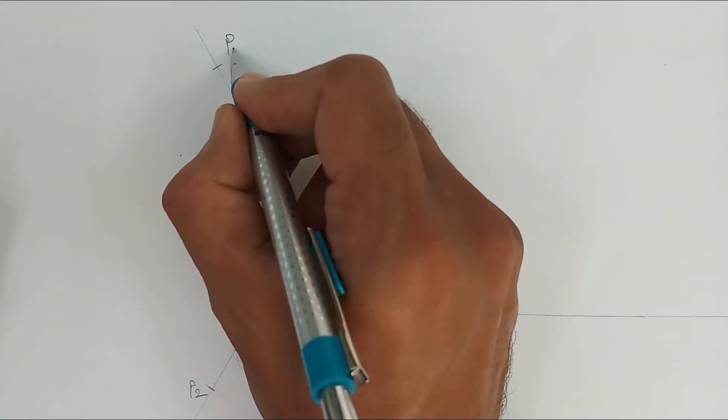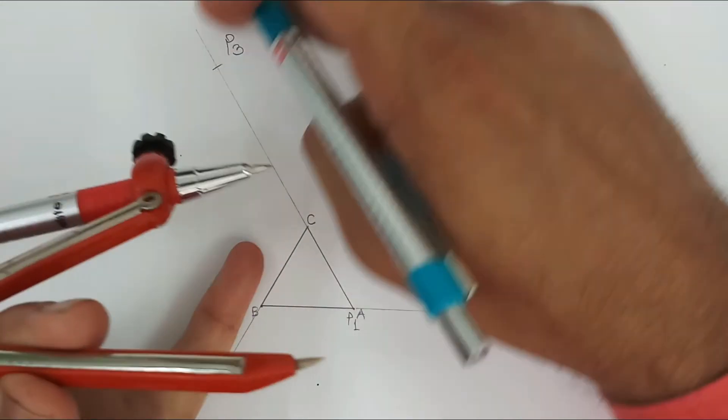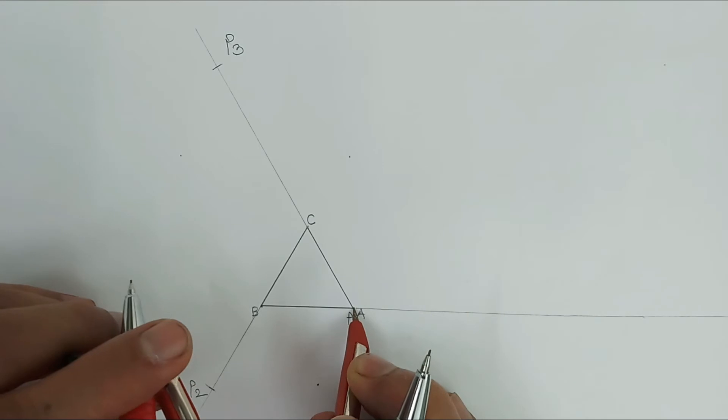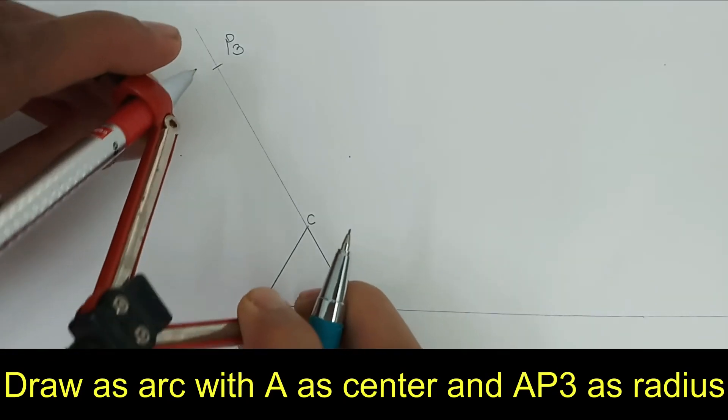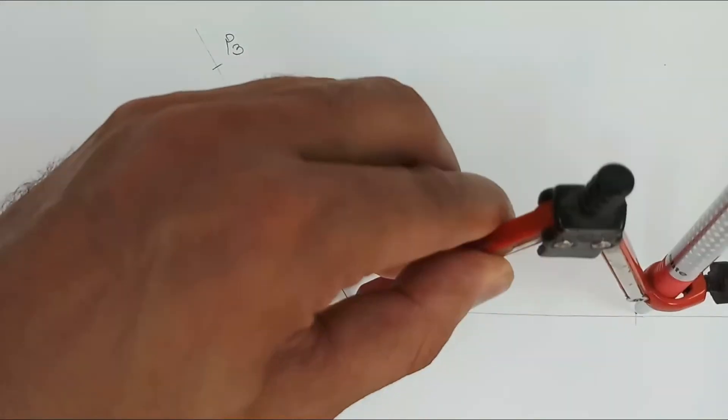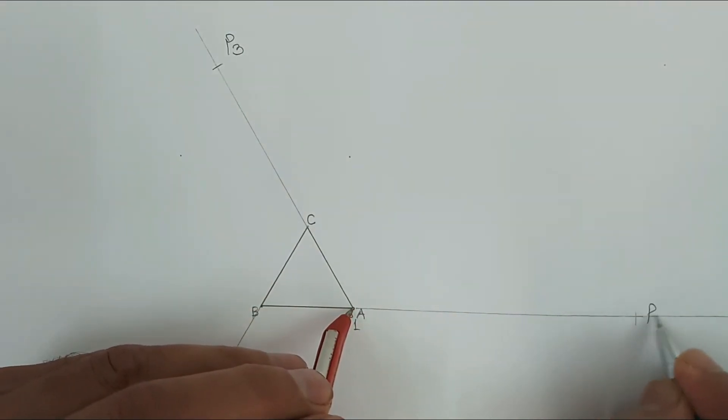So this point will be P3 and as I further unwind it, it will rotate around A, that is A as center and AP3 as radius. So this is the last point of the curve, that is say P4.